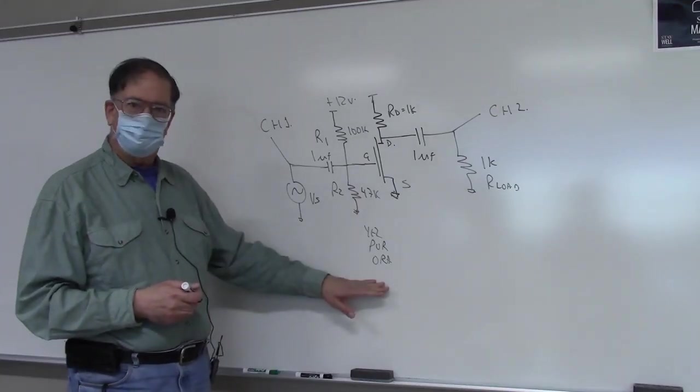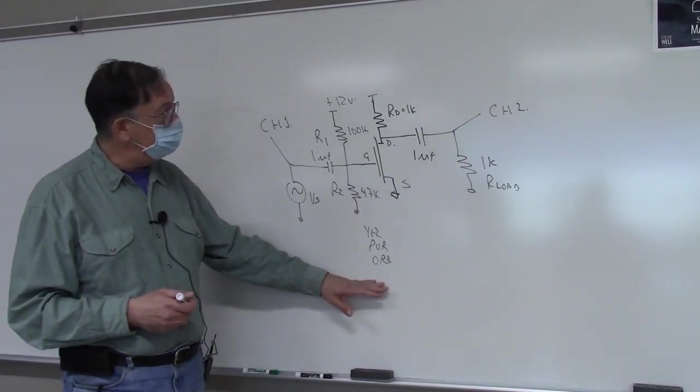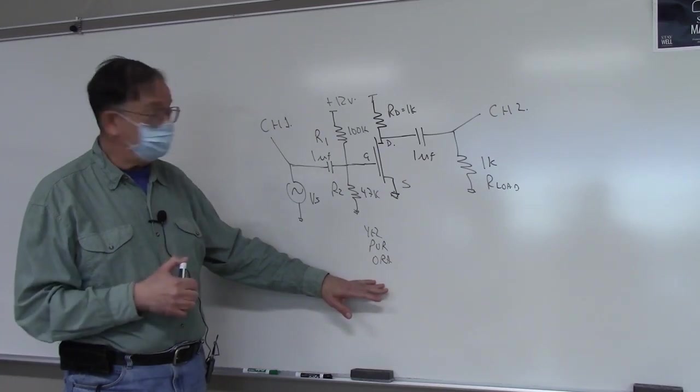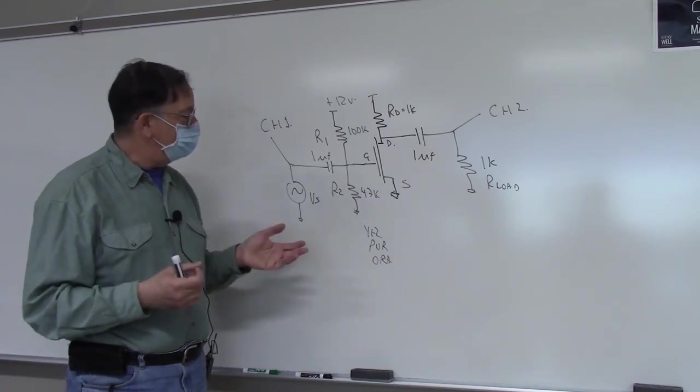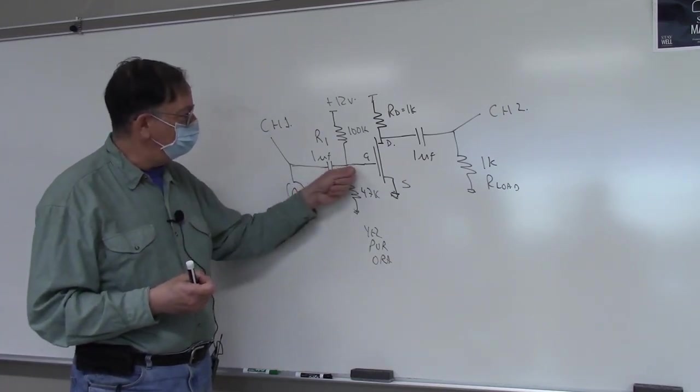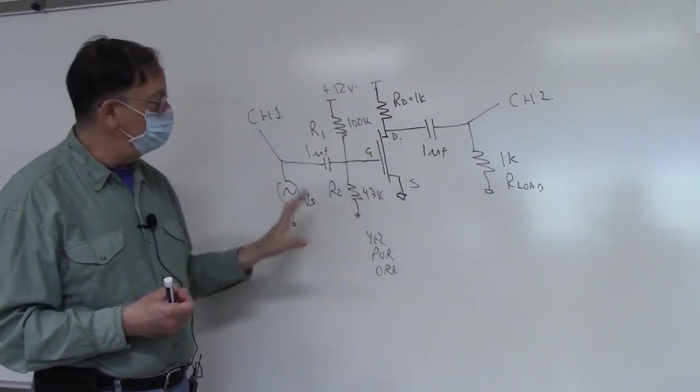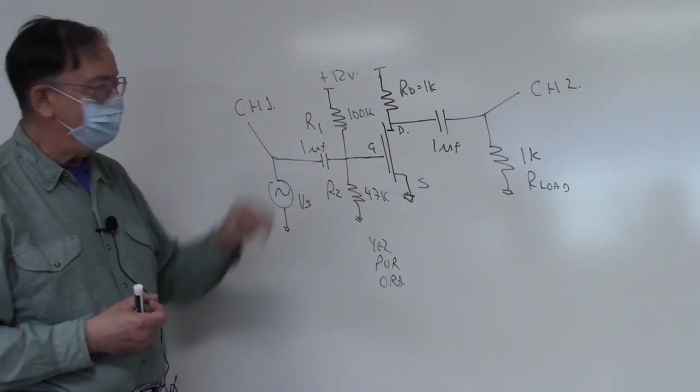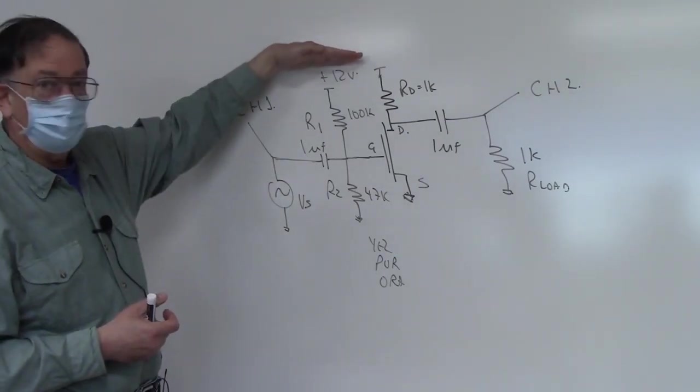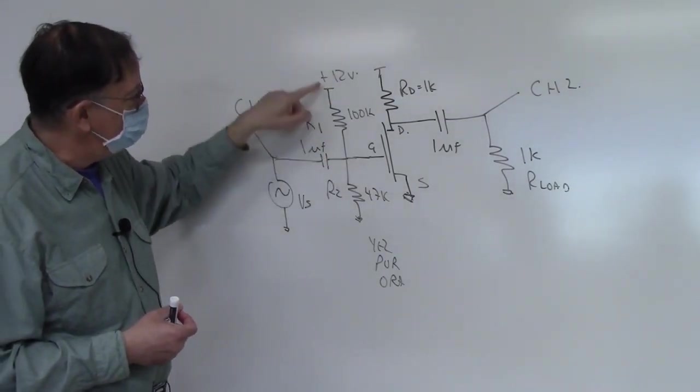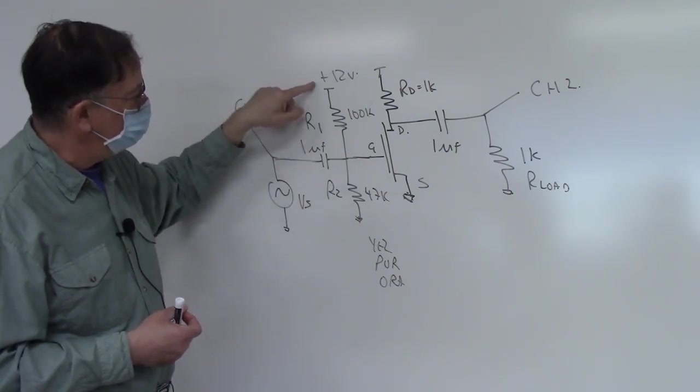Okay, for part two of the MOSFET experiment, we're going to be building ourselves a little amplifier just like we did for the JFETs. The nice thing about this amplifier now is that the gate voltage is going to be positive while the drain voltage is positive. So we can do this all off of a single power supply.